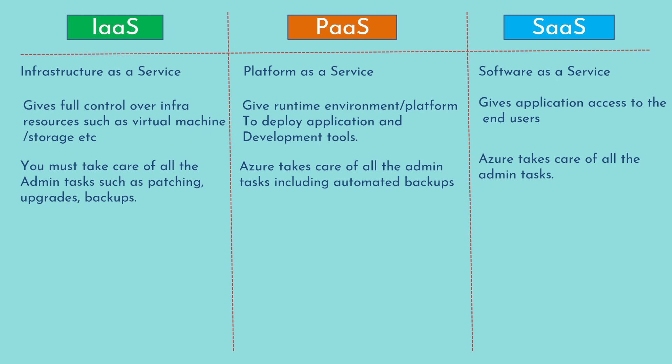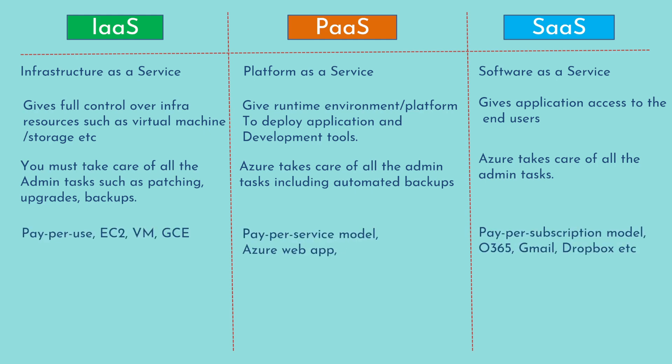In PaaS and SaaS, Azure takes care of all your admin tasks. When you need full control over your operating system, you go with IaaS. When you do not want to take care of all your admin tasks, you go with either PaaS or SaaS. IaaS models are mostly pay-per-use — you pay for whatever service you use for a particular duration — such as Amazon EC2, Azure VMs, or GCP Compute Engine. PaaS models are mostly service-based, such as Azure Web App. SaaS models are mostly subscription-based, such as Gmail, Office 365, or Dropbox.